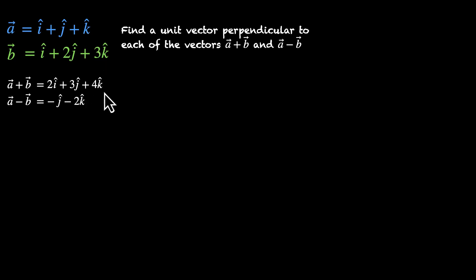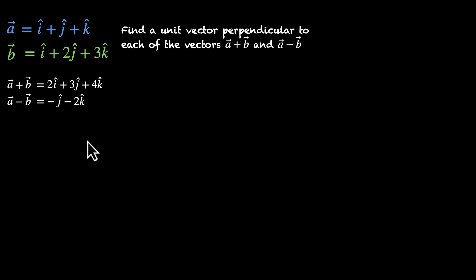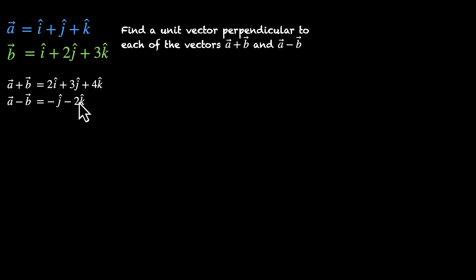So we have these two vectors, and we need to find a vector that's perpendicular to both of them. If you recall, the cross product gives us that. The cross product of these two vectors will give us a vector that's perpendicular to both of them. So let's find the cross product.